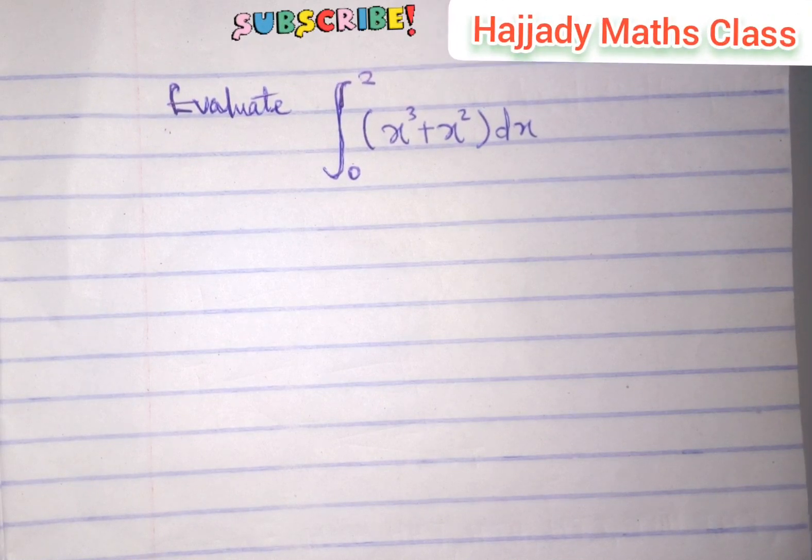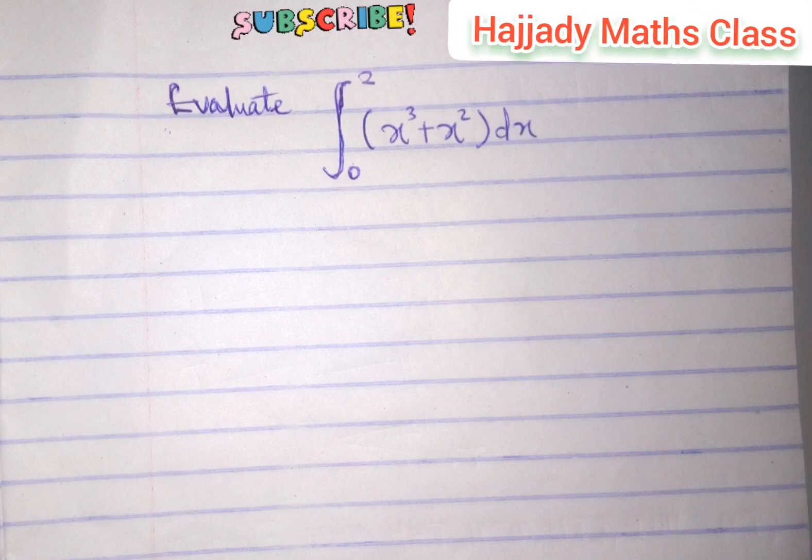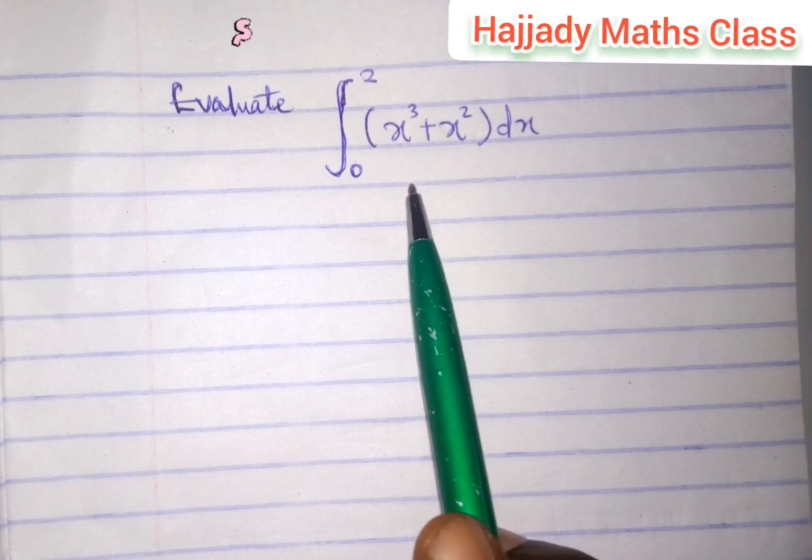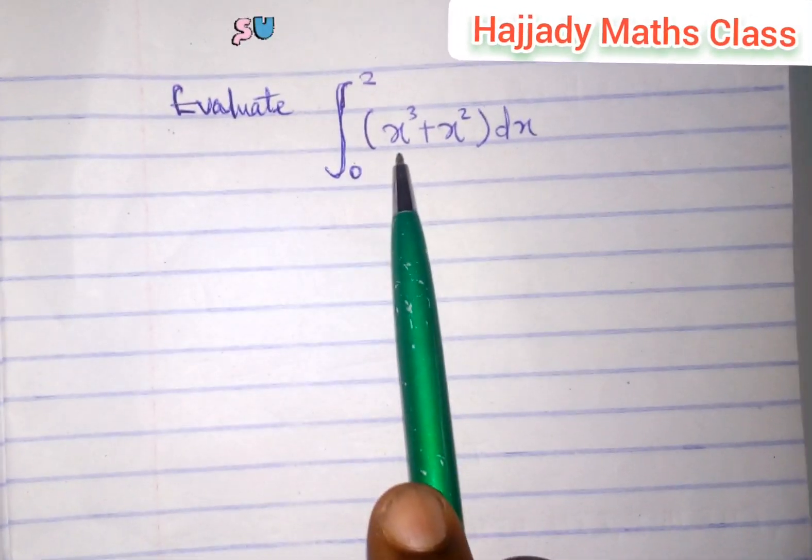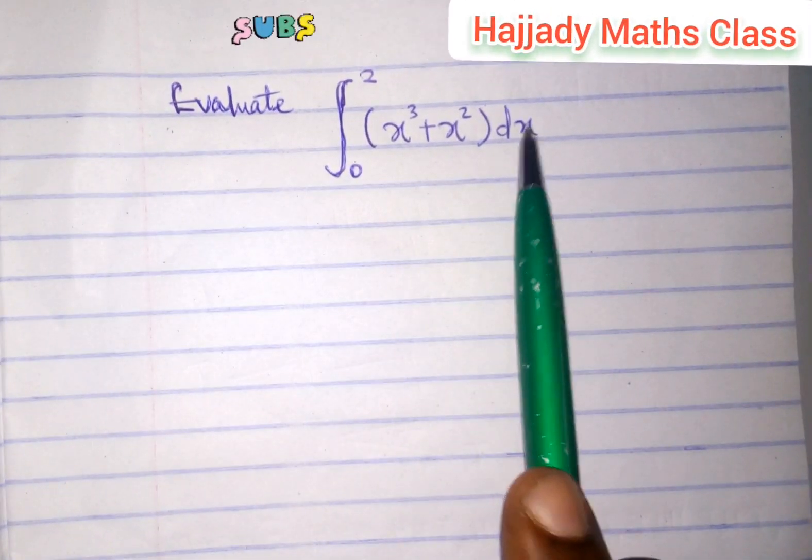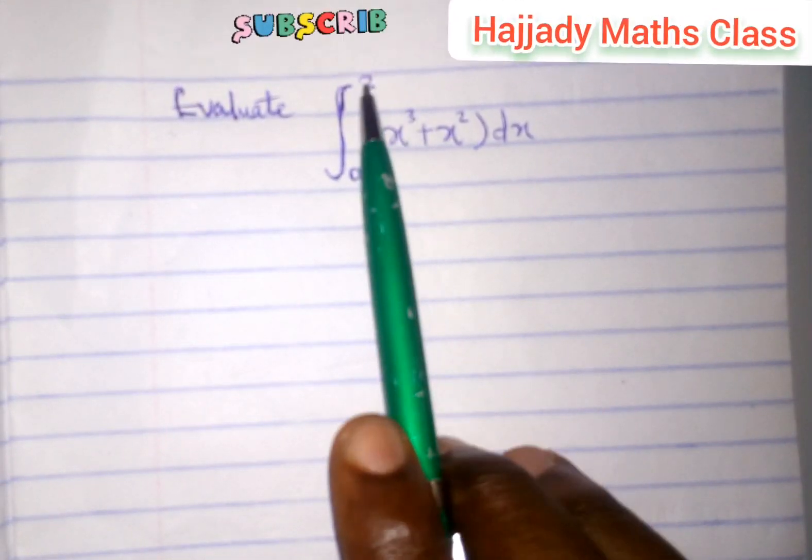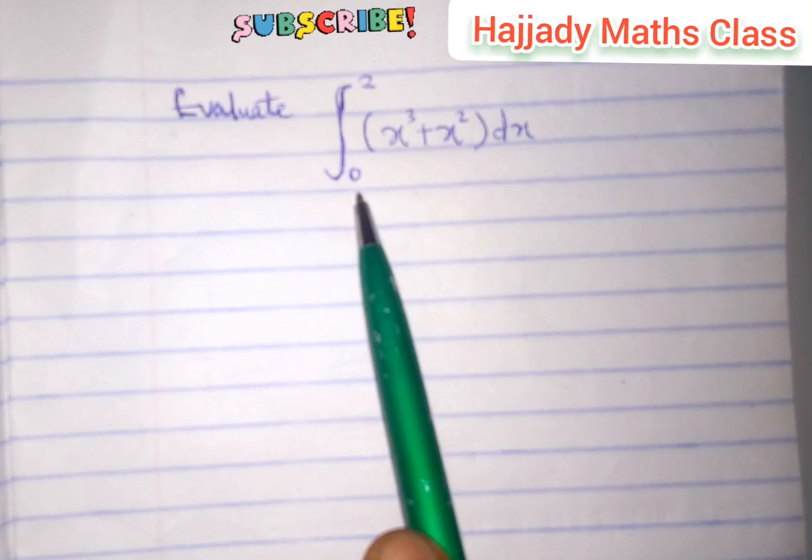Today, we'll be solving this question on integration. This has limits also. Now, we are expected to evaluate this. And for us to do that, there's a need for us to integrate this and this with respect to dx and set the limit of 2 and 0. This is the upper limit, while this is the lower limit.